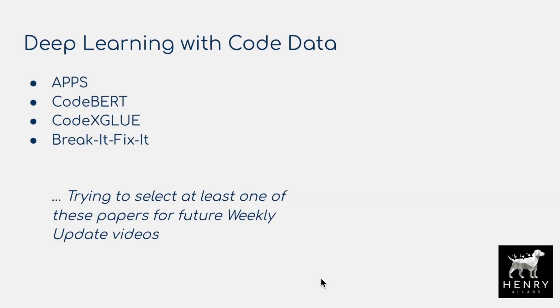As background on deep learning with code data, different papers explore using code and programming languages as the dataset. CodeBERT does Electra-style language modeling with Java, JavaScript, and Python code. CodexGlue is a collection of supervised learning tasks for code — similar to the GLUE benchmark — trying to unify different supervised learning tasks across text-code, code-only, and text-only domains, integrating natural language descriptions with docstrings.